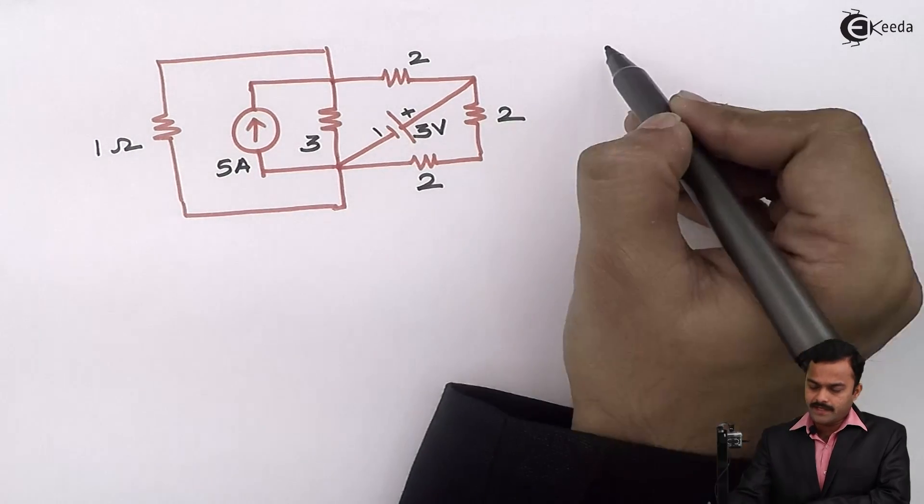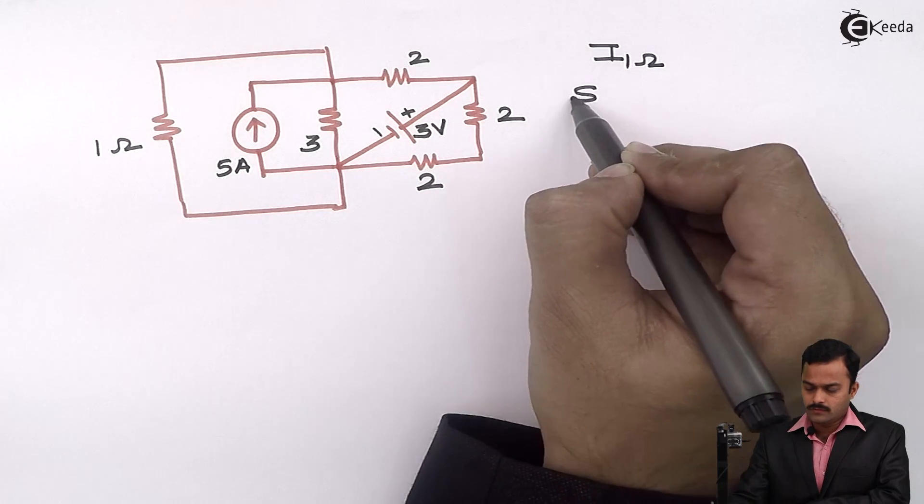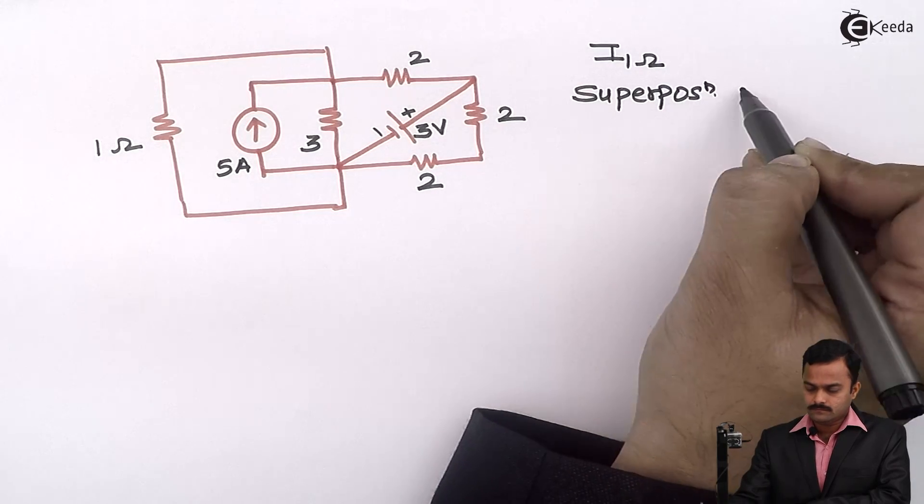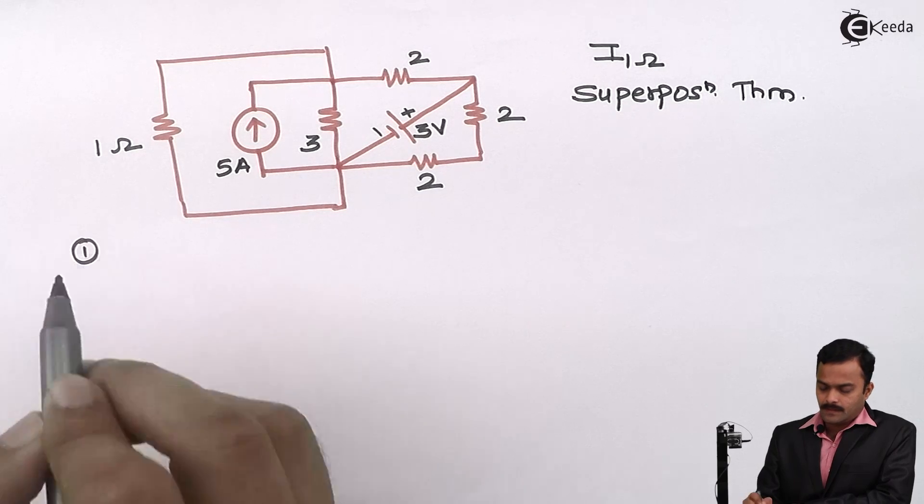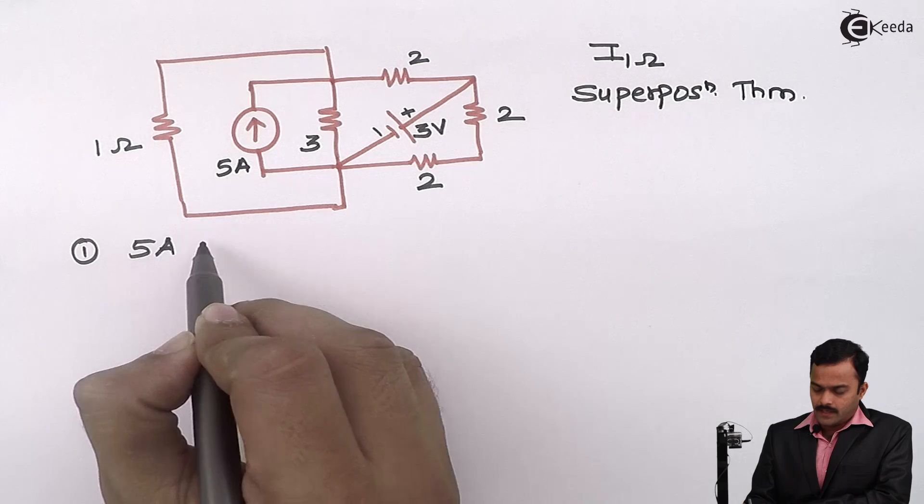We are supposed to find out current flowing through 1 ohm resistance using Superposition Theorem. Let us start. First, I will consider 5 ampere acting alone.